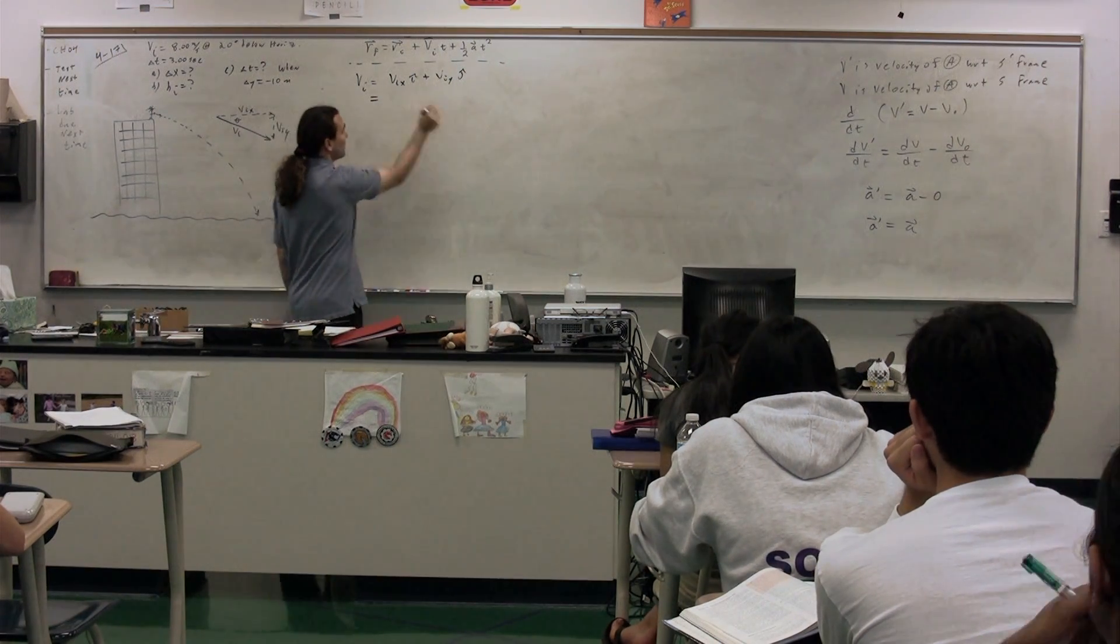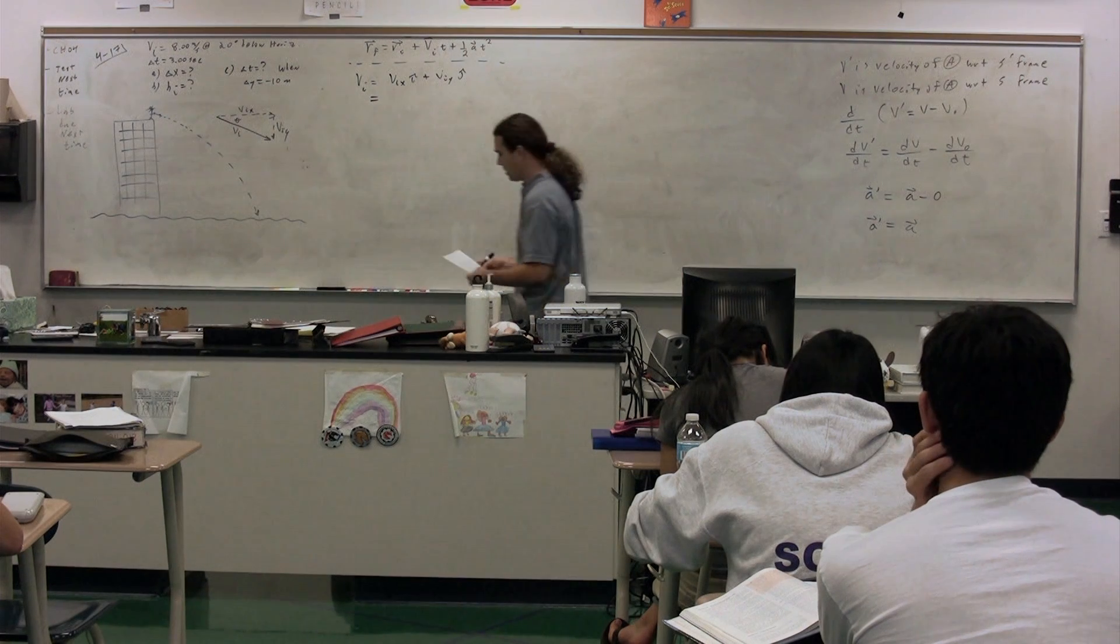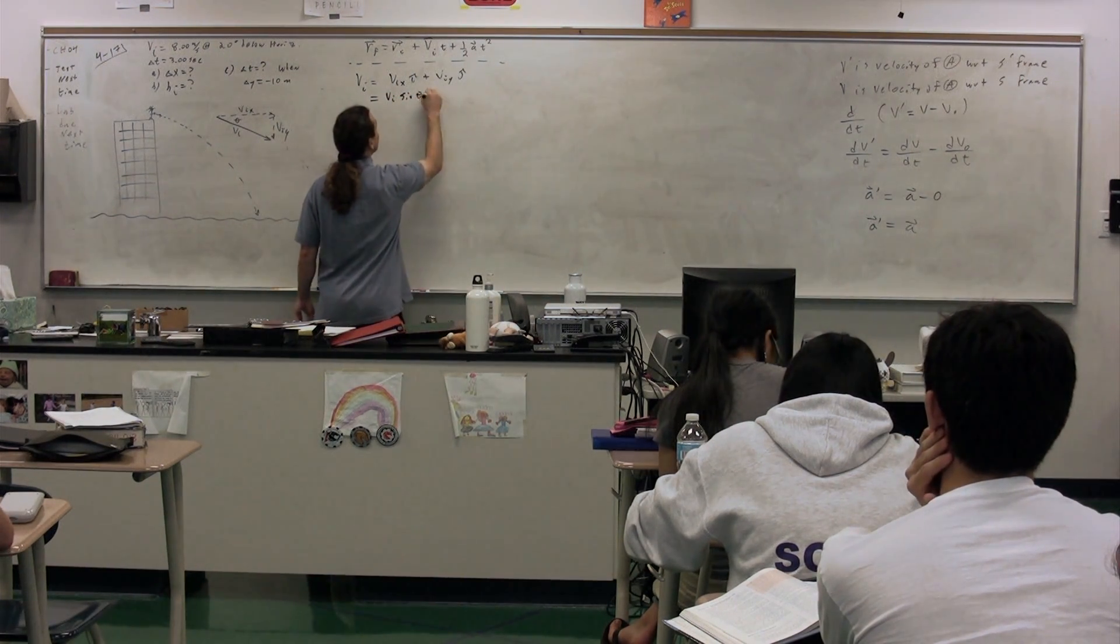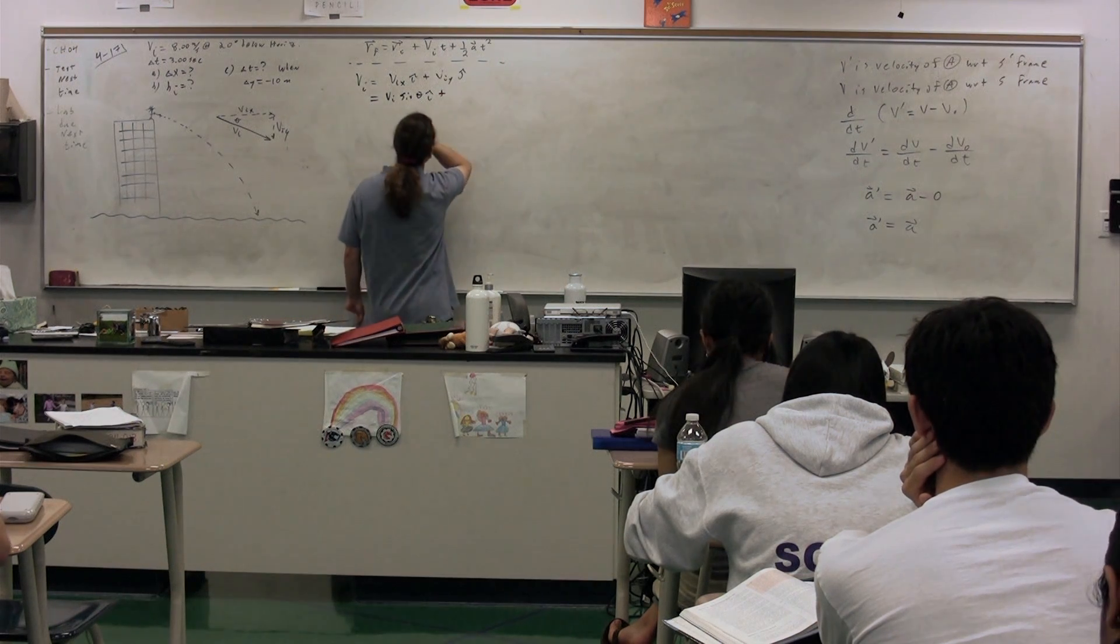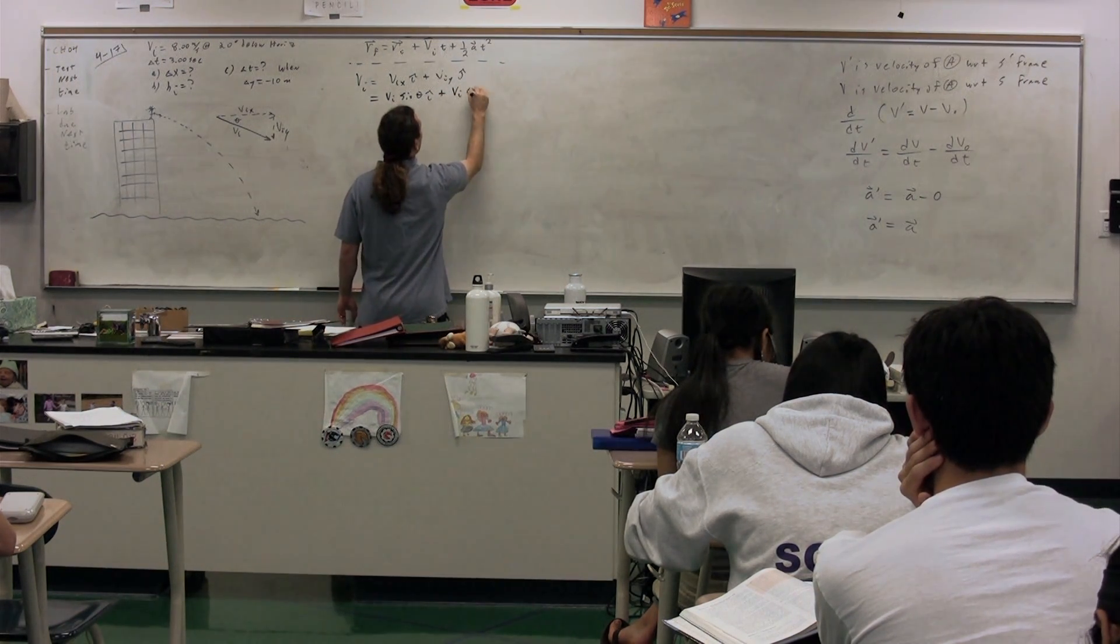Okay. So now you're going to substitute in what you know for velocity initial in the x-direction. Go ahead. It's equal to velocity initial times sine theta times i plus velocity initial times cosine theta. Okay?